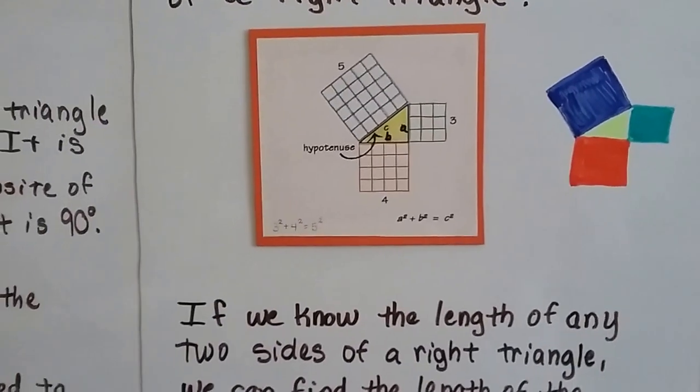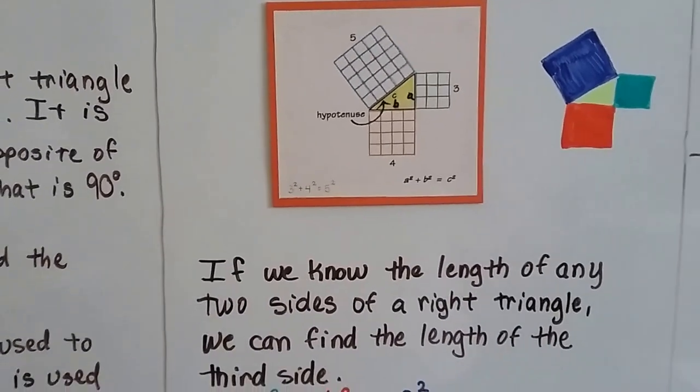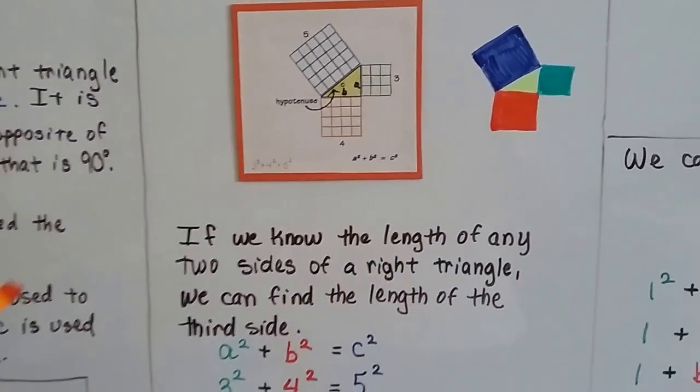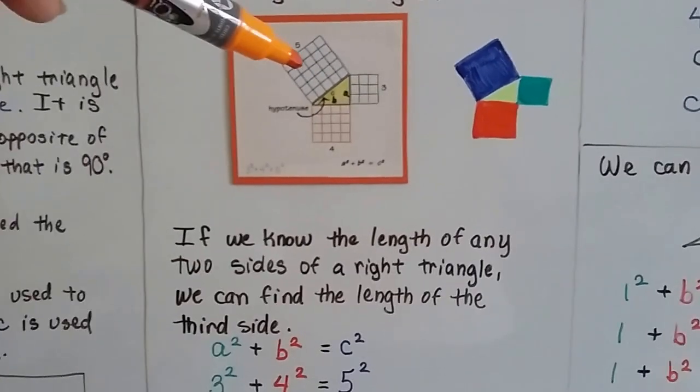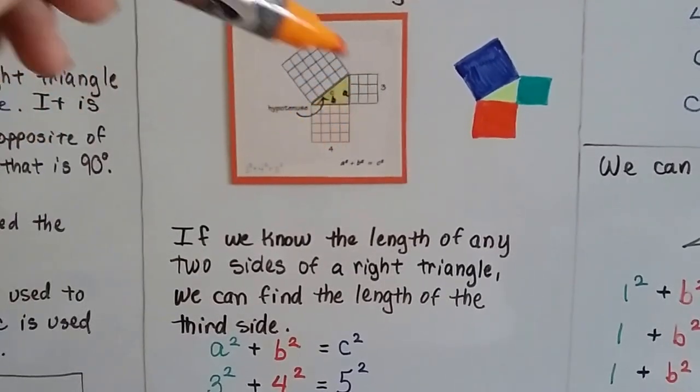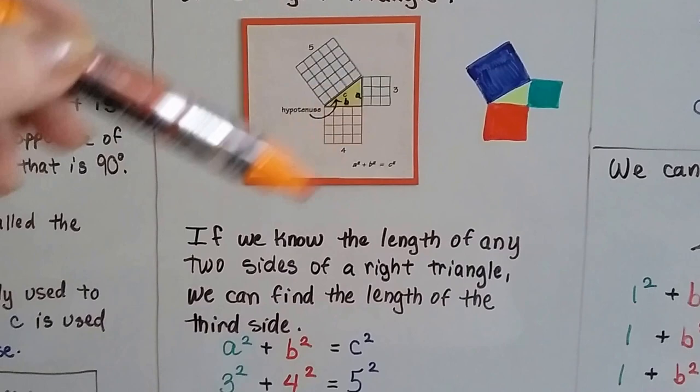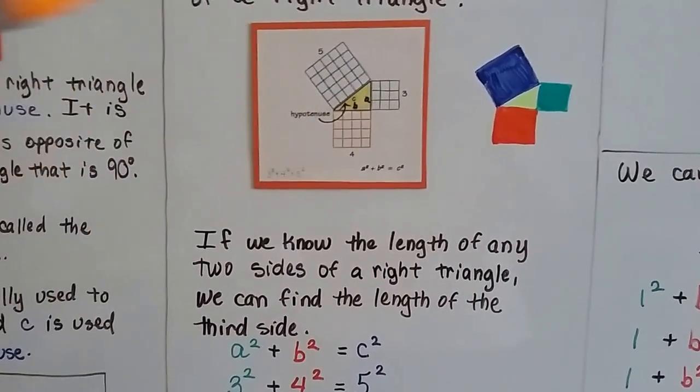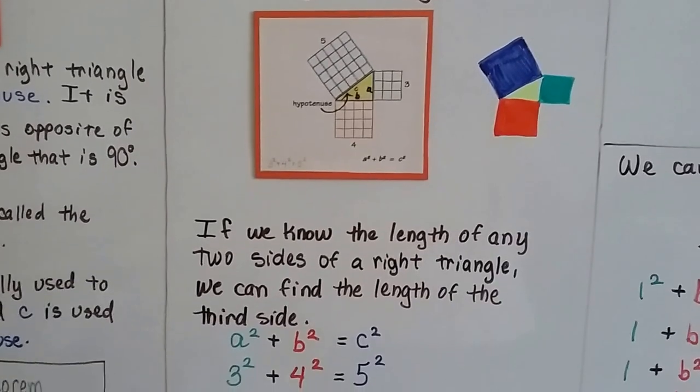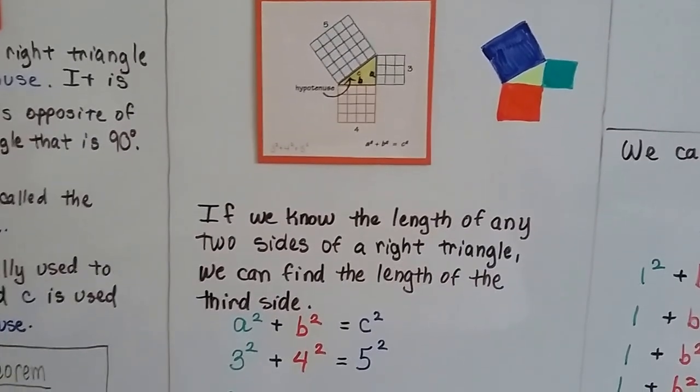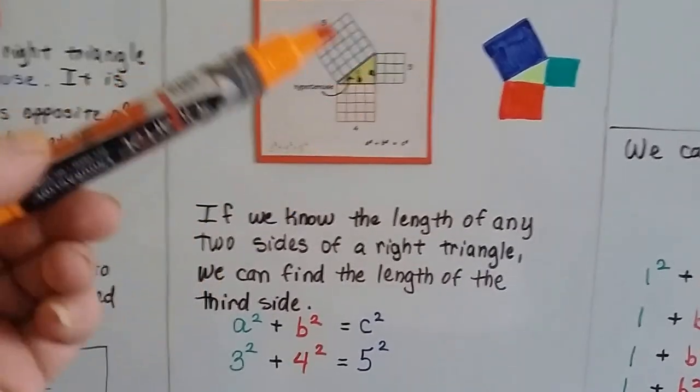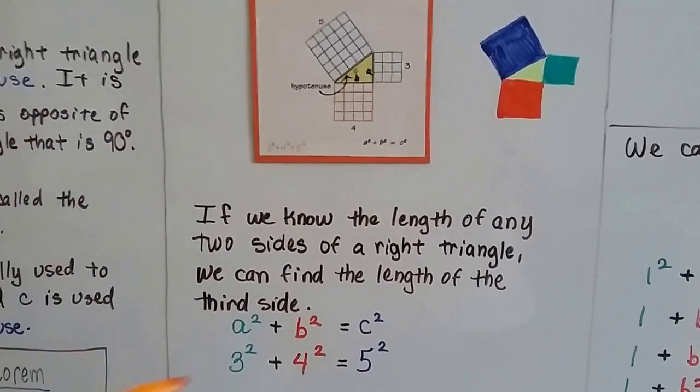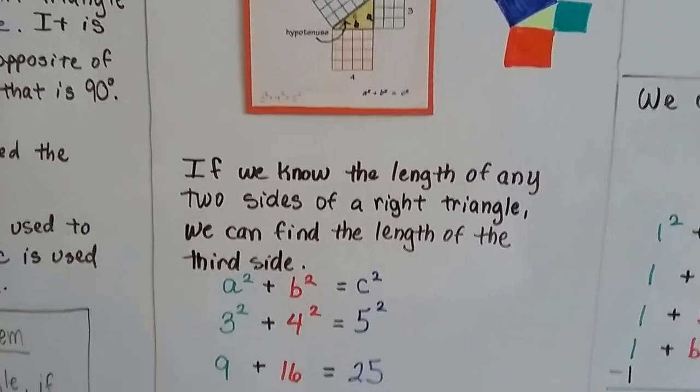When we know the length of any two sides of a right triangle, we can find the length of the third side. So it actually ends up breaking down like this picture. If this side's 3 and this side's 4, then that side's 5. And these are the only few numbers that do that. It doesn't do that with any number. You can't say 4, 5, 6, or 7, 8, 9. It doesn't do that. Just 3, 4, and 5 happen to work out that way.